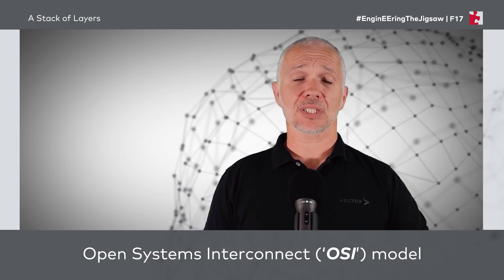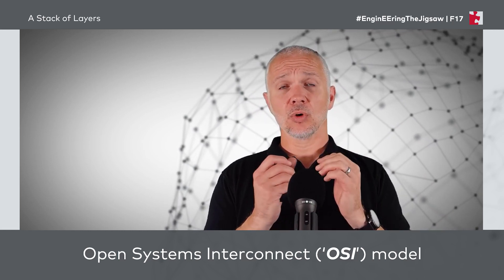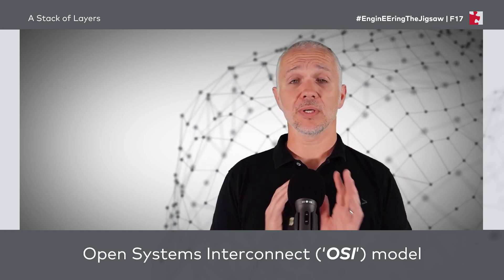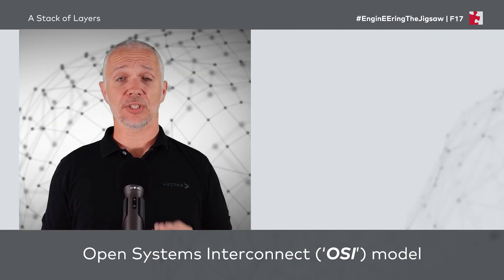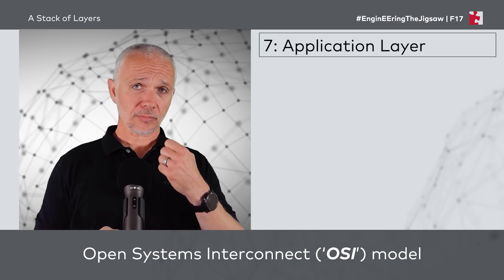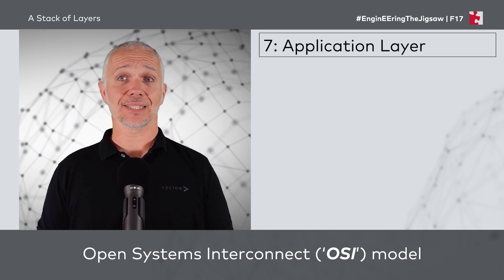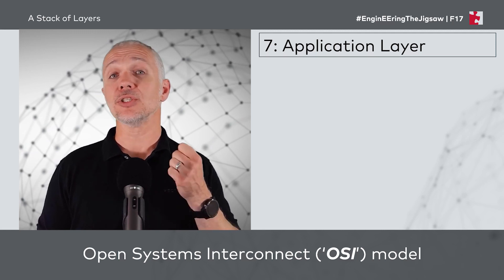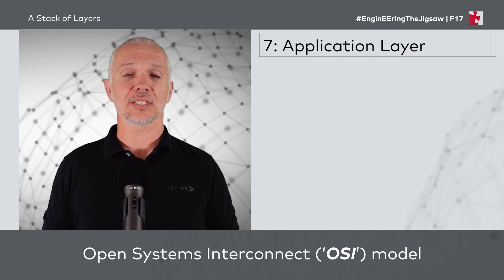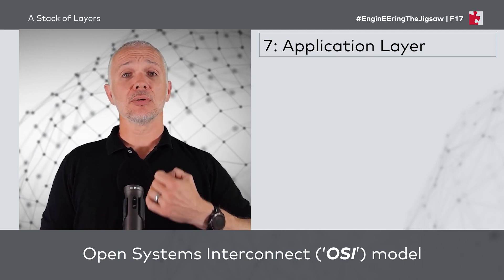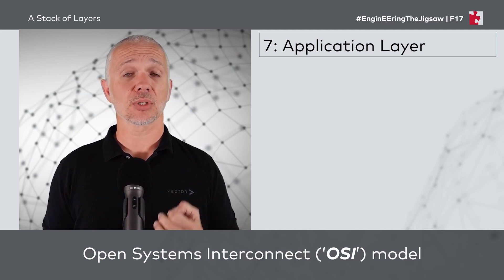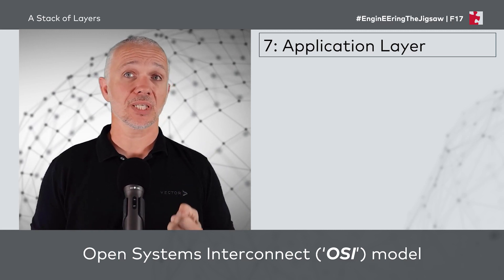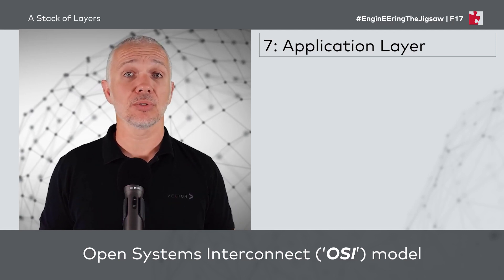The first layer that our software directly interacts with is called the application layer. This is not where our application itself sits; it's where the protocol that the application uses sits — Layer 7, the application layer. So Hypertext Transfer Protocol, or HTTP, which we discussed in episode F14, is a Layer 7 protocol.